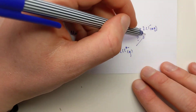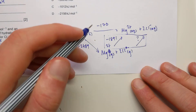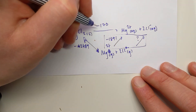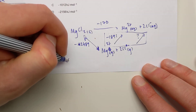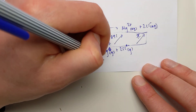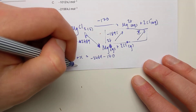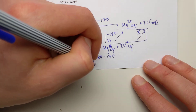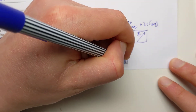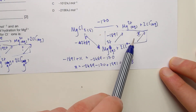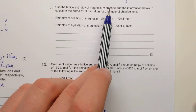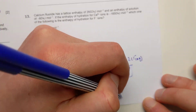The total hydration change (minus 1891 + x) equals the alternative route around the cycle: flip the lattice enthalpy to minus 2489, then follow the enthalpy of solution arrow (minus 170). So: minus 1891 + x = minus 2489 − 170. Rearranging: x = minus 2489 minus 170 plus 1891 = minus 768. Since this covers two moles of chloride ions, divide by two: minus 768 ÷ 2 = minus 384 kJ/mol.